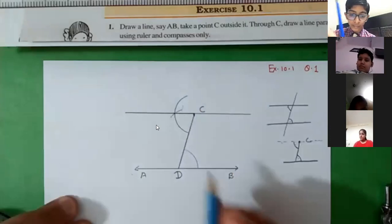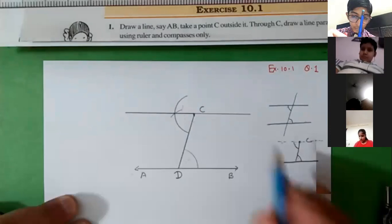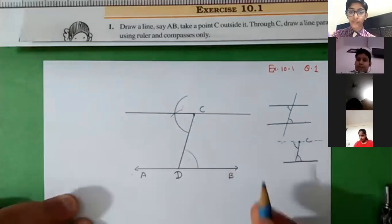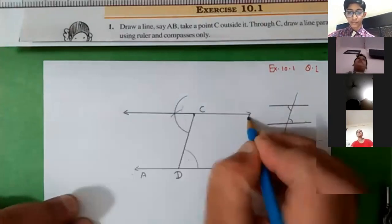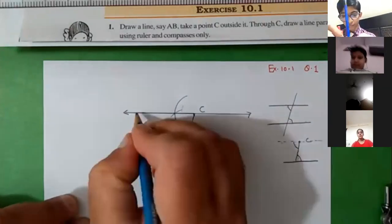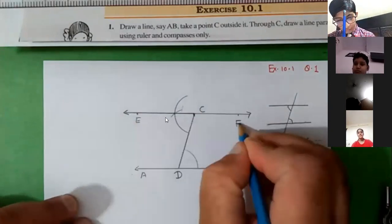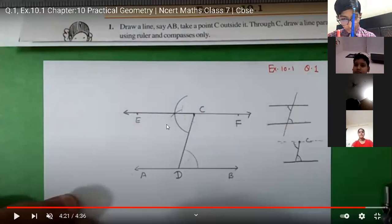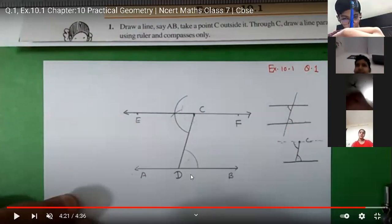These are two alternate interior angles which are of the same measurement. Now AB line is parallel to that line. We are going to mark this new line and mark the points — I am marking the endpoints here as E and F. So draw it in this way, children.